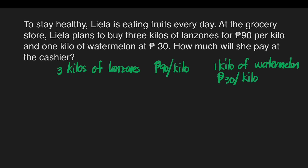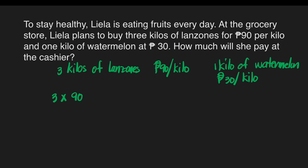First, we need to write a numerical expression to represent the situation. What is a numerical expression? It is a combination of numbers, operation signs, and grouping symbols. Grouping symbols show which operation should be done first. For this case, let's write the numerical expression. So, we have 3 kilos times 90 plus 30.